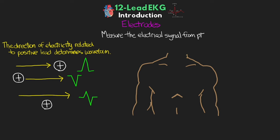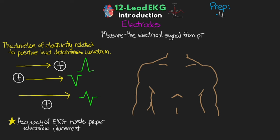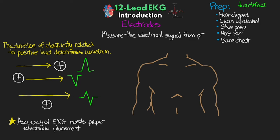For electrode placement, it's really important to have proper positioning for accuracy of the EKG recording, because improper positioning will change the appearance of the waveform and can either mask issues or falsely present others. For preparation, ideally the patient's hair should be clipped, the site cleaned with alcohol, and skin prep applied to reduce artifact. We also want to elevate the head to around 30 degrees if possible, keep the chest bare without sheets or clothing over the electrodes, and keep the patient warm and still since shivering will introduce artifact.